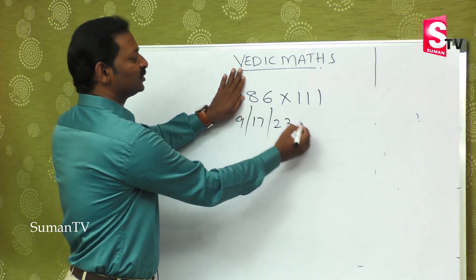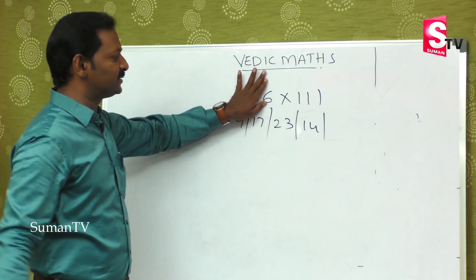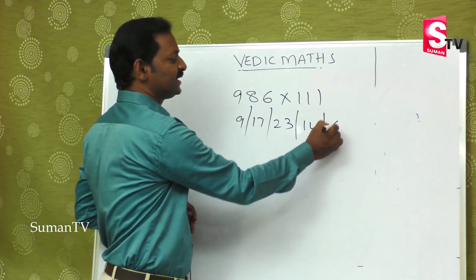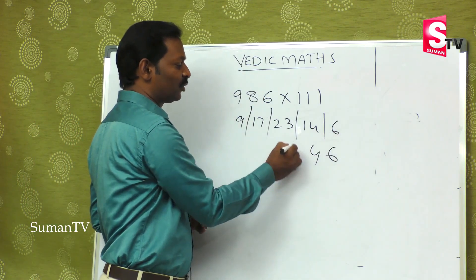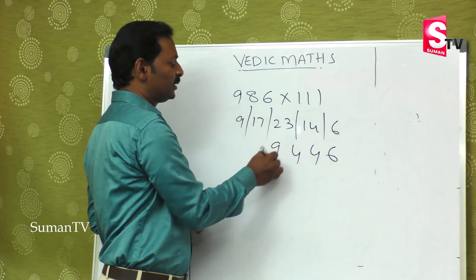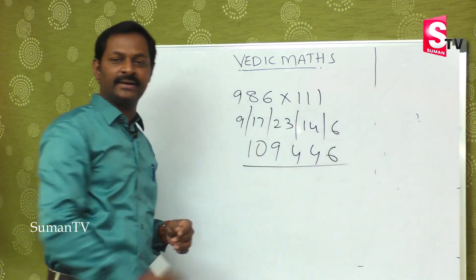Last two digits give 14, and the last digit is 6. So finally: 6, 4, 4, 9, 1, 0. This is the right answer.